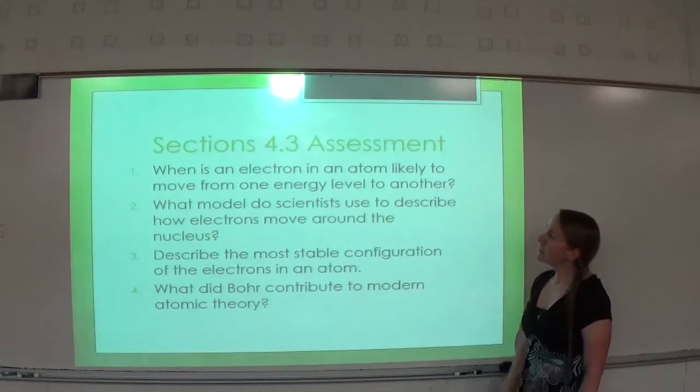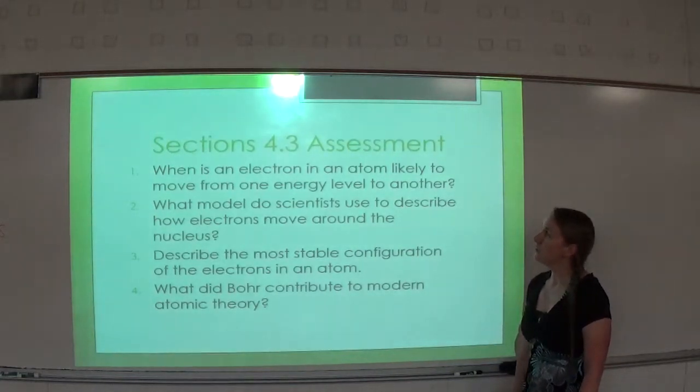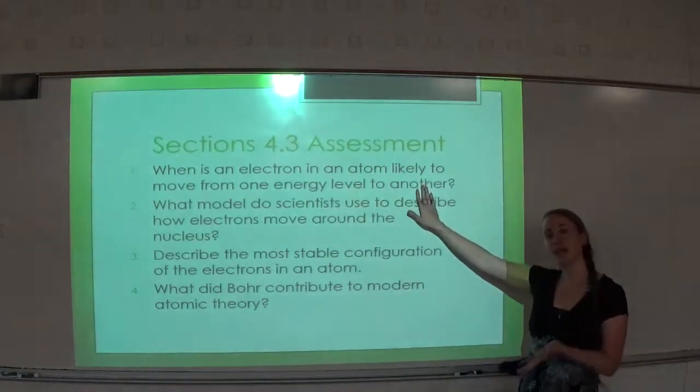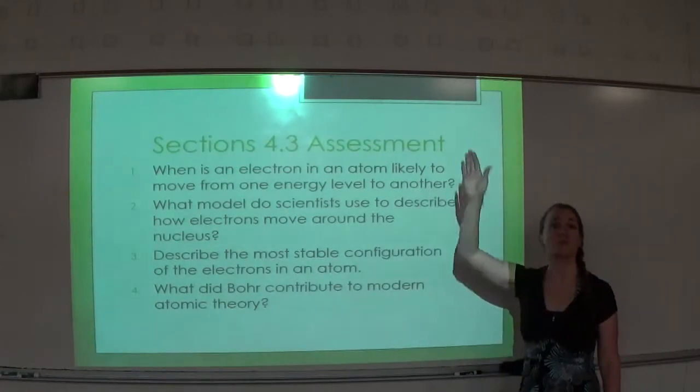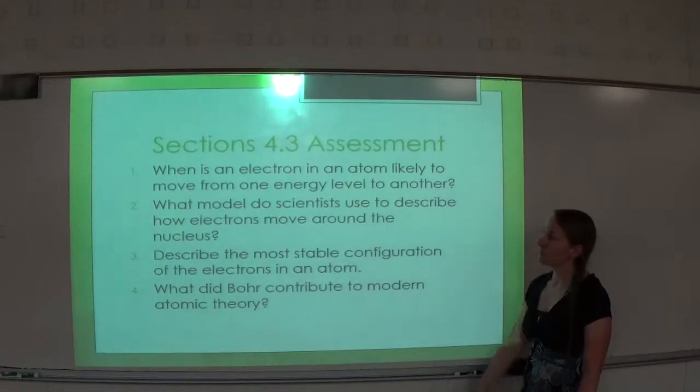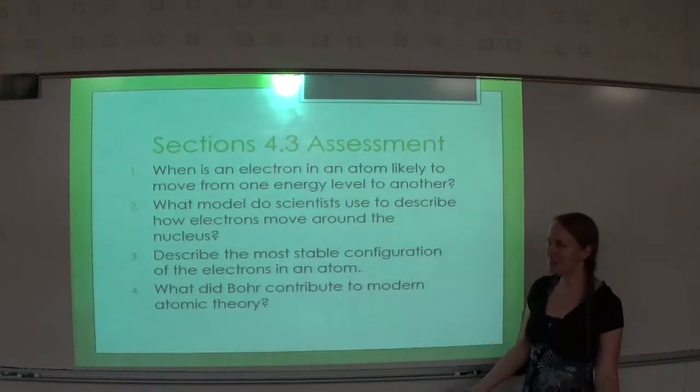When is an electron in an atom likely to move from one energy level to another? Well, it can either lose or gain energy. If it loses or gains energy, that's when it will either move up or down. Number two, what models do scientists use to describe how electrons move around the nucleus? Well, in this chapter, we say Bohr's model.